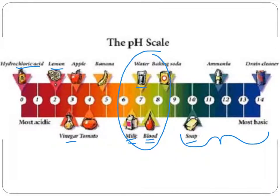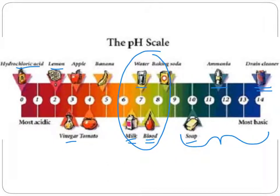Most of the common substances on the base side or the alkaline side of the pH scale are things we use to clean with — soap and other detergents, ammonia, and then lye or drain cleaner is the most basic, and it is just as dangerous as the very, very acidic hydrochloric acid on the other side. So either end of the pH scale is dangerous to living things.